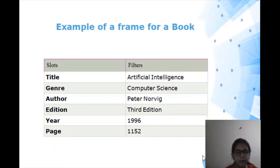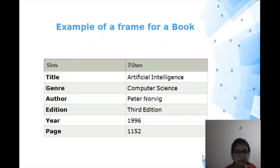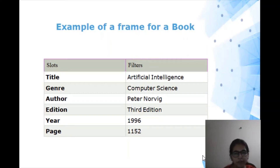Let's take an example of a book frame — specifically, a frame for an artificial intelligence book. It has slots and fillers, and a slot can contain as many values. The slots include title, genre, author, edition, year, and pages. We can infer from the values that it is an artificial intelligence book and the author is Peter Norvig.